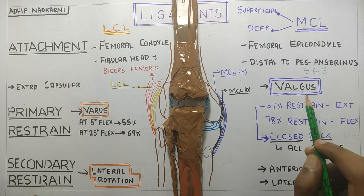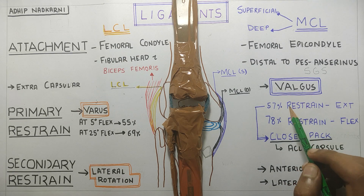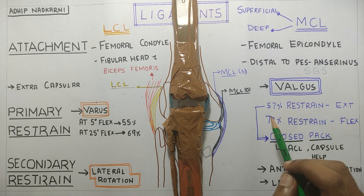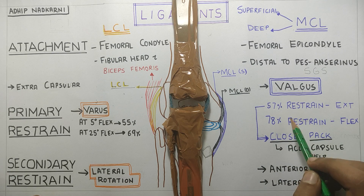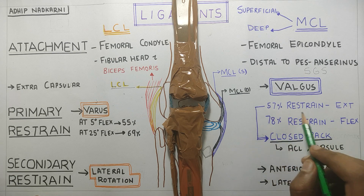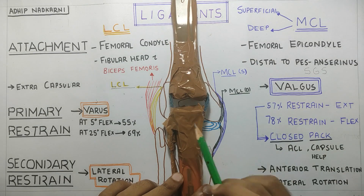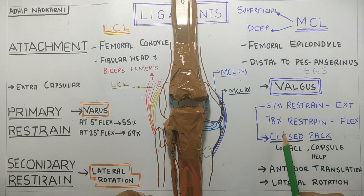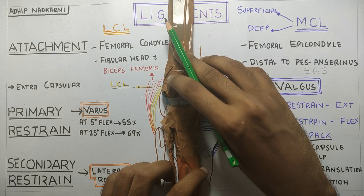This valgus restraint will vary according to the degree of flexion or extension in the knee joint. 57% of restraint is provided when the knee is in full extension, and 78% of restraint is provided when the knee is in flexion.